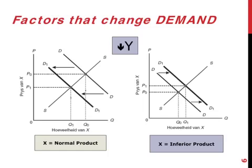If your income is less, you will be buying more inferior products. So if you suddenly lose a lot of income, you are eating less fillet steak but eating more cans of tuna. The whole demand curve for tuna moves towards the right, and the equilibrium price and equilibrium quantity are both higher.